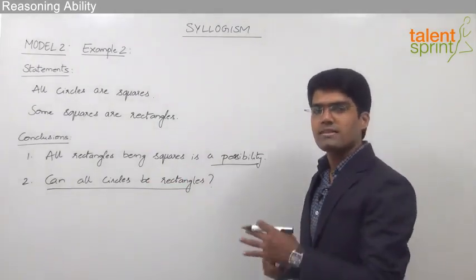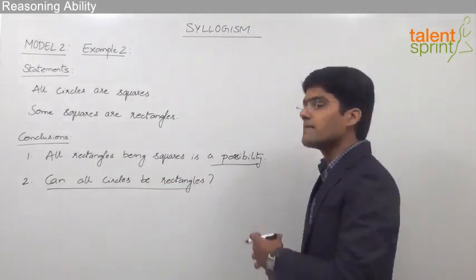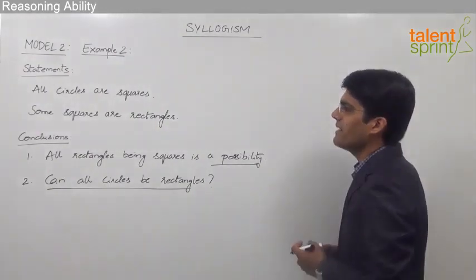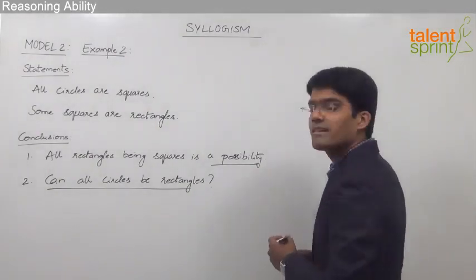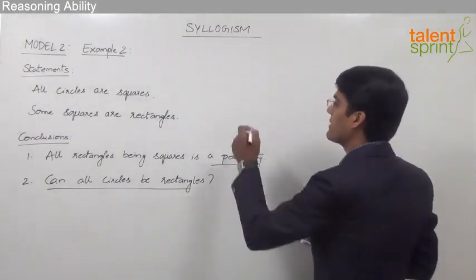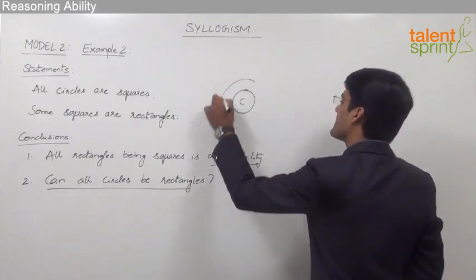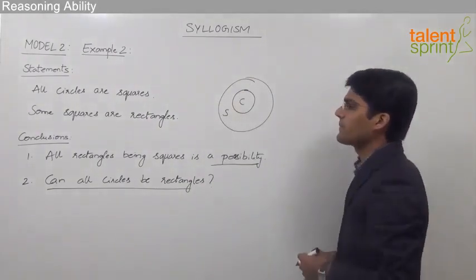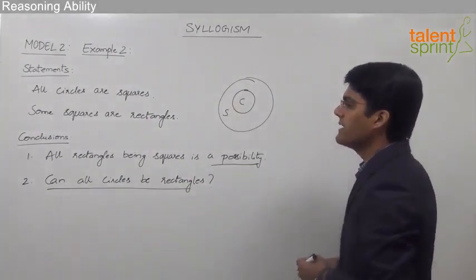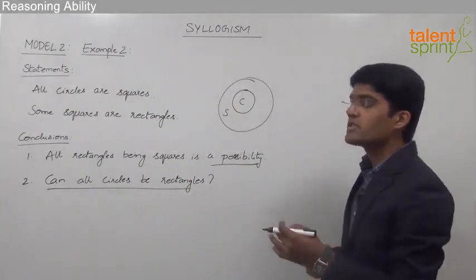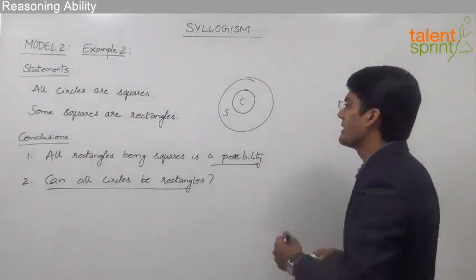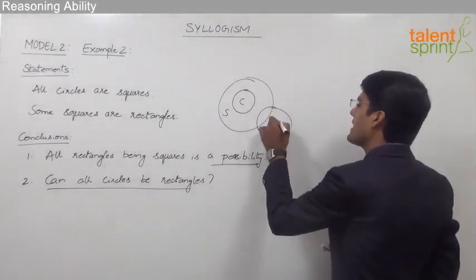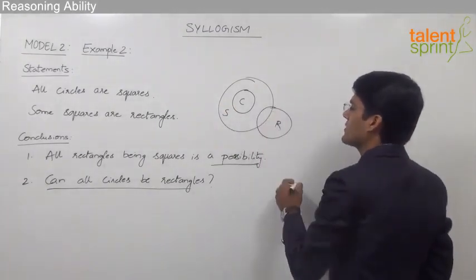Let us first understand the basic diagram for these statements. The first statement, all circles are squares, can be taken as shown. The second statement, some squares are rectangles, can also be drawn as shown.